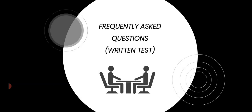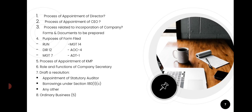Now, some companies conduct a written test. What can they ask? First, the process of appointment of a director, then the CEO appointment process. Next, some forms to know: DIR-12, MGT-7, AOC-4, ADT-1, and MGT-14. Then the process of appointment of a non-executive director.